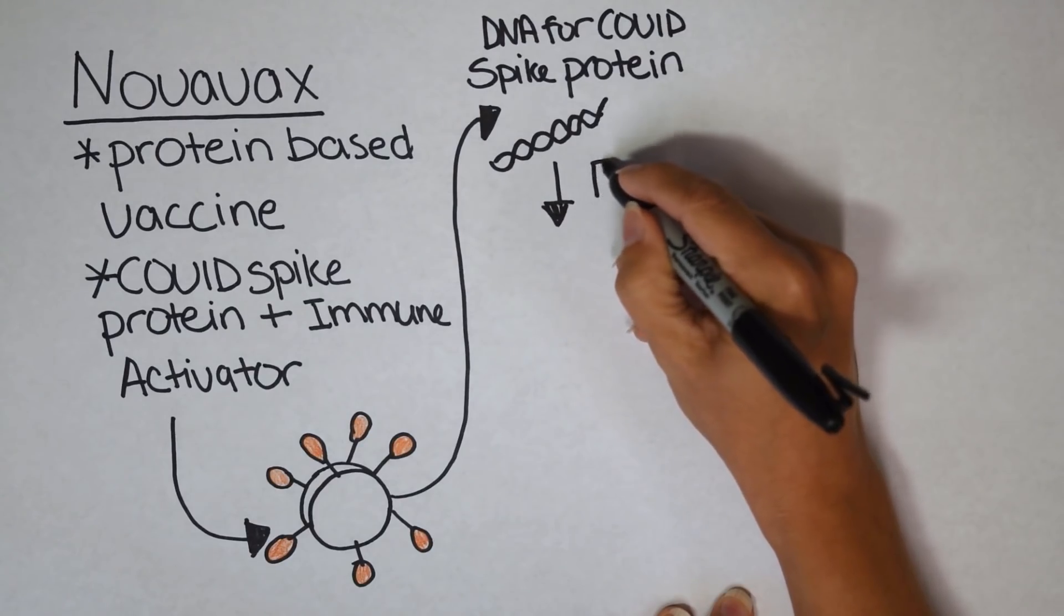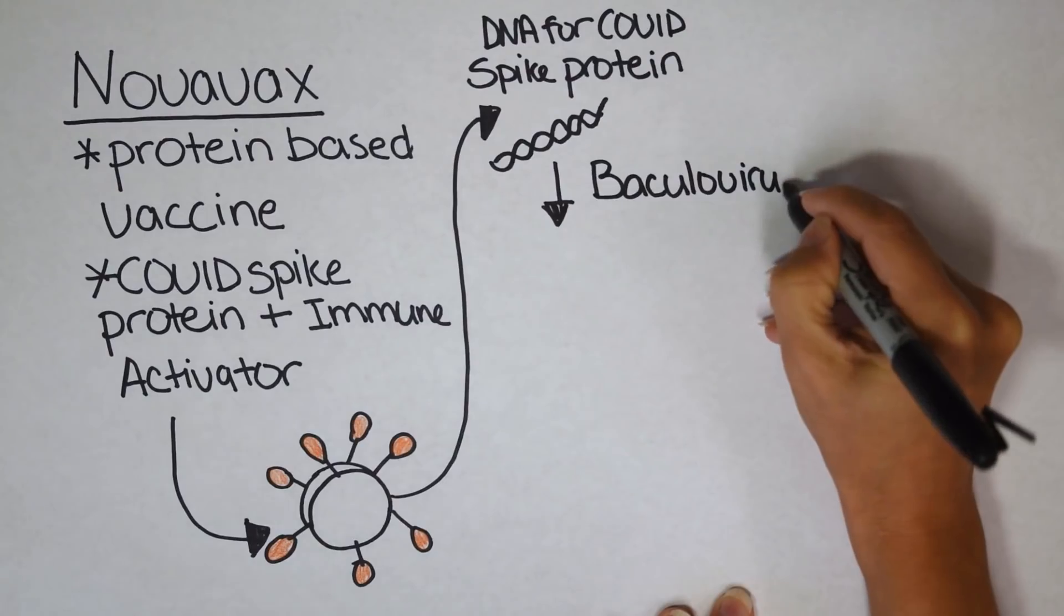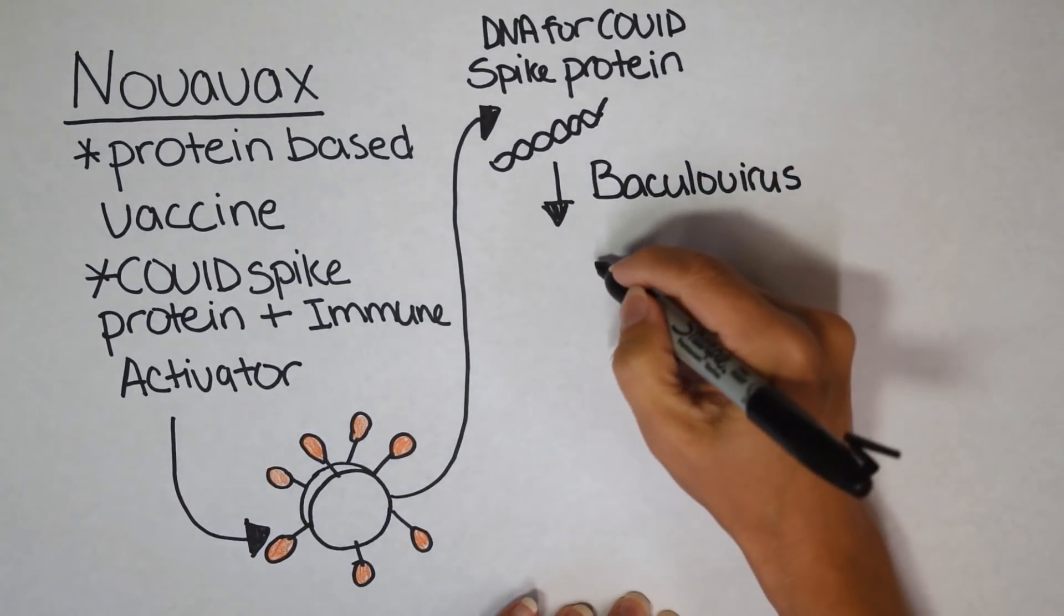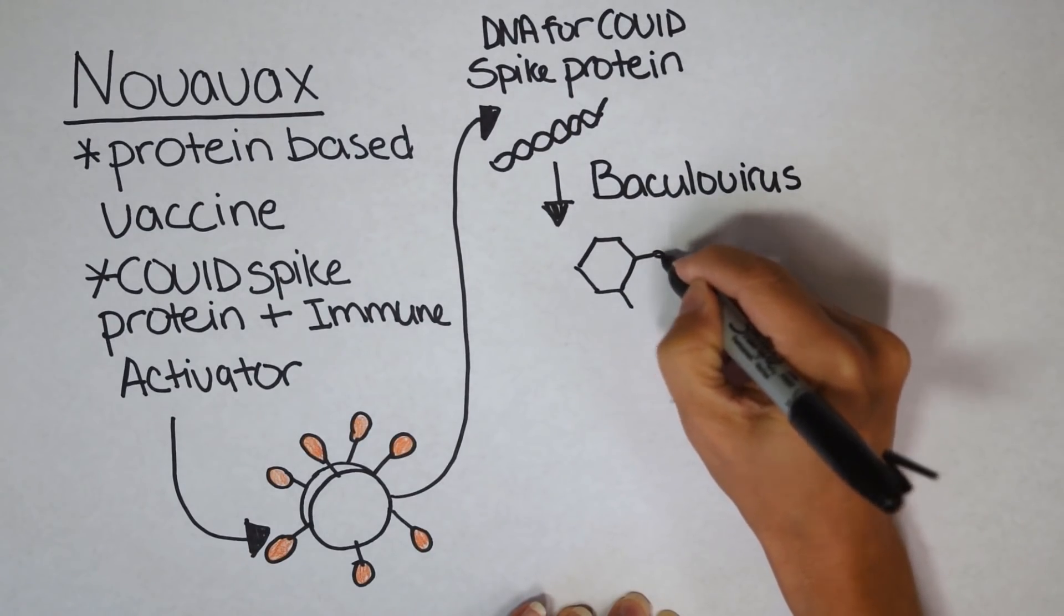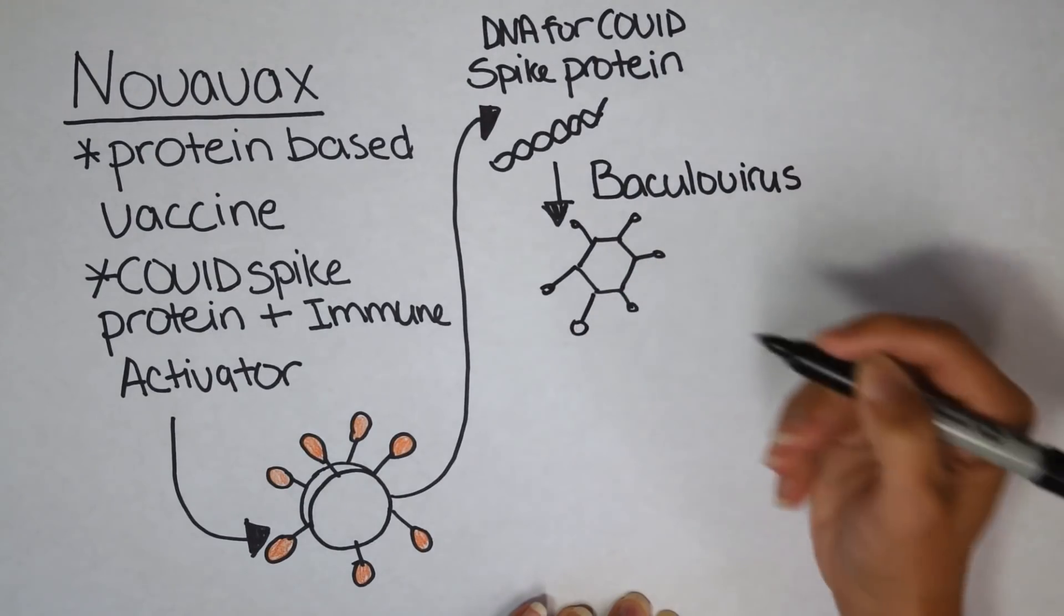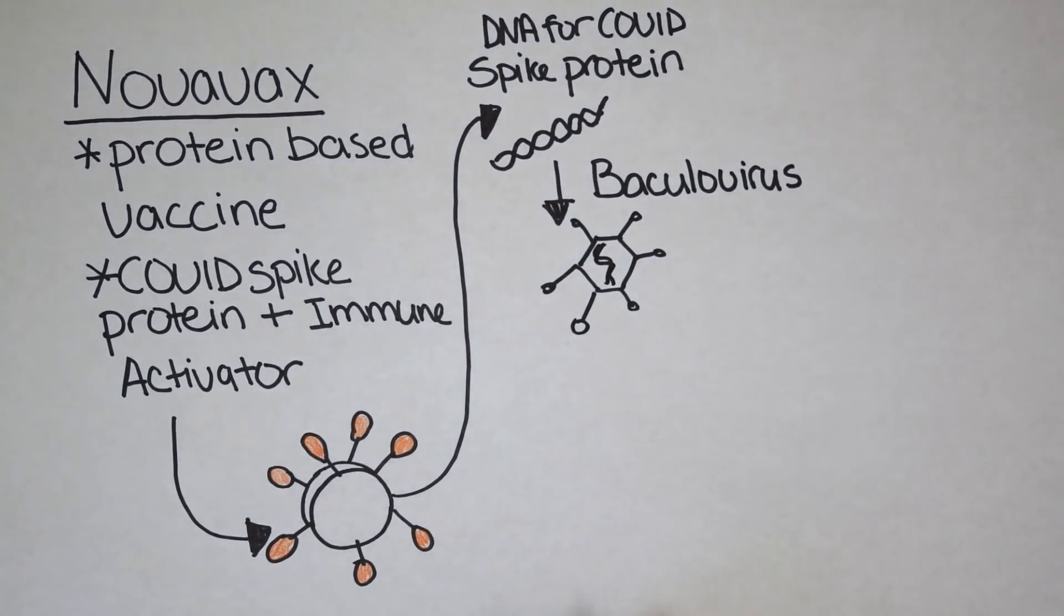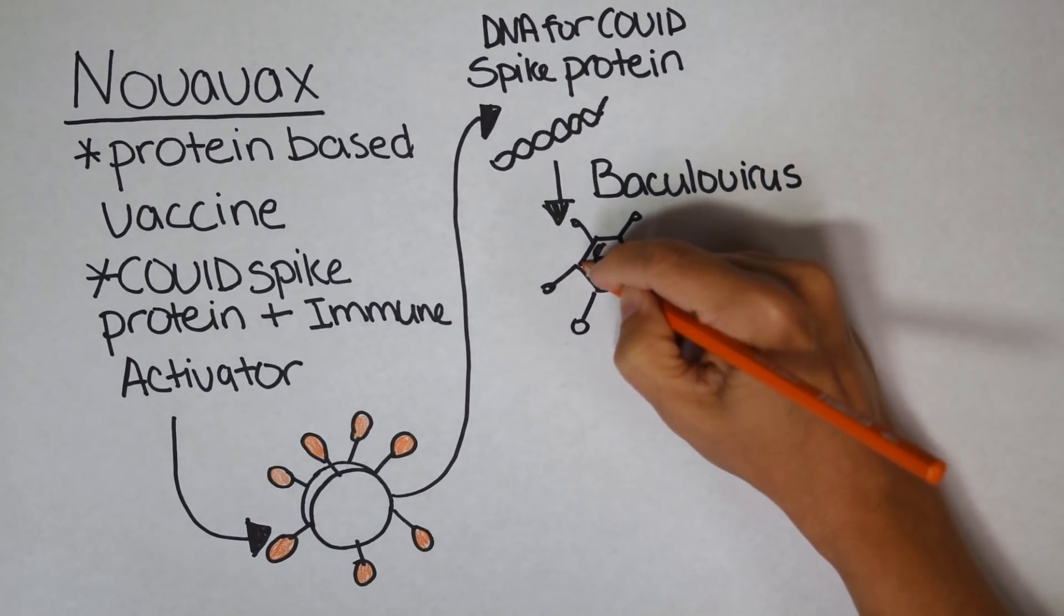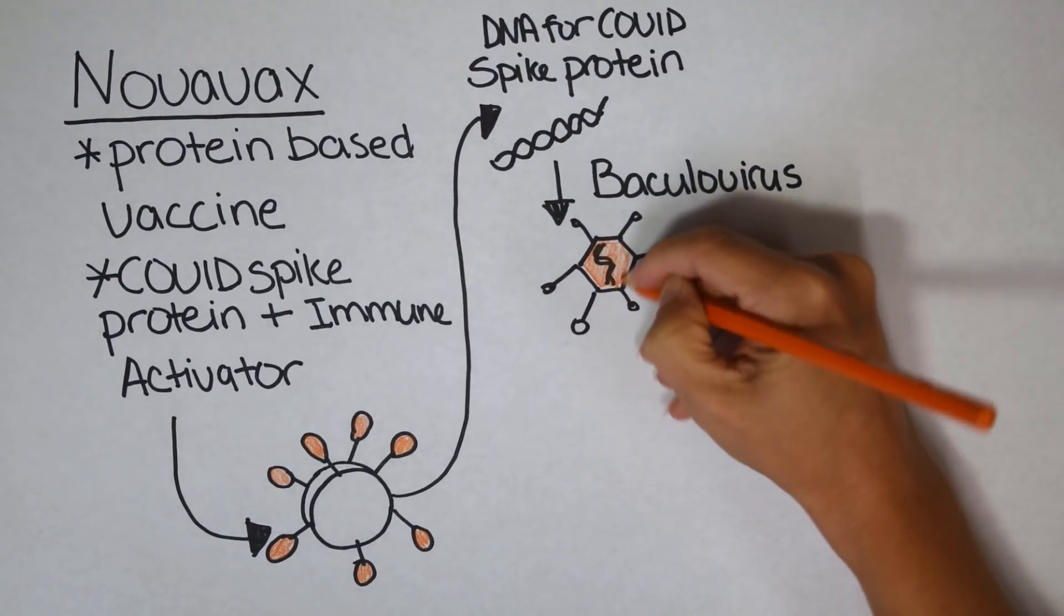And what they did is they introduced it to another virus. But your body is never seeing this virus. It's a baculovirus. You've probably never heard of these. I hadn't until I looked into Novavax because it's a virus that only affects insects. Yeah, so that's why we haven't heard of them because they pretty much never get people sick.